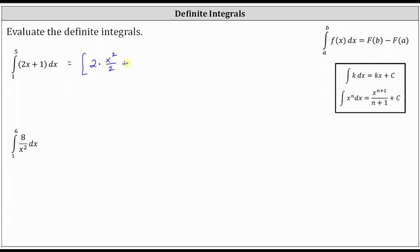Then plus the antiderivative of one with respect to x, which is x. The limits of integration are from one to five. Let's simplify the antiderivative — two divided by two simplifies to one, leaving us with x squared plus x.